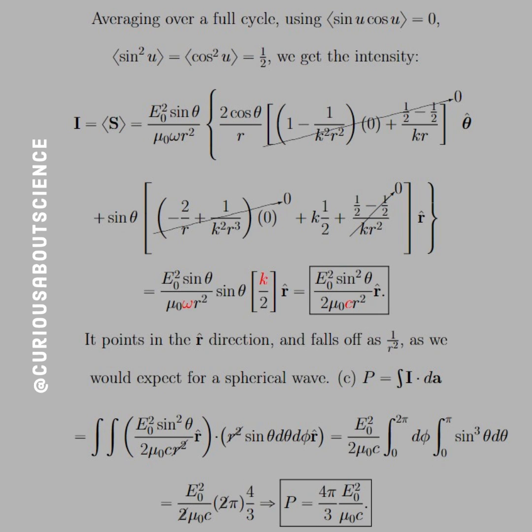And yeah, we can evaluate pretty easy. The φ integral gives us 2π. The sin³θ integral gives us 4/3. And we're able to simplify that quite easy. The power is equal to 4π/3 times E₀²/(μ₀c). So we're good to go. Not bad, but definitely messy.